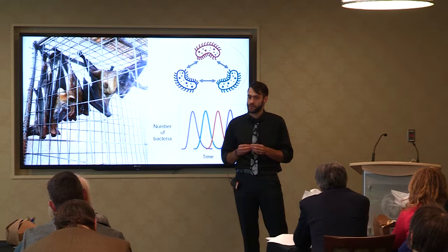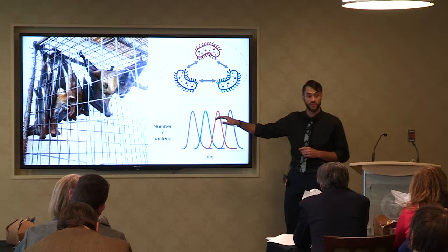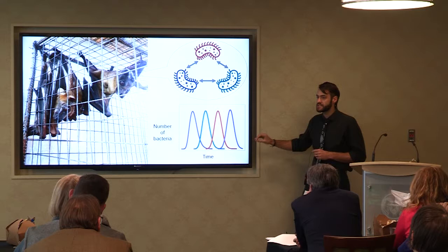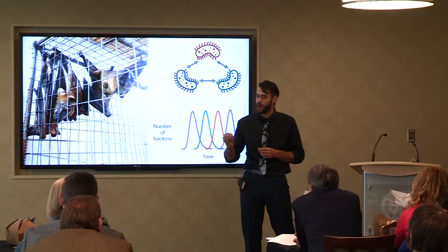With long-term dynamics, we can start to understand the mechanism of their interactions. Using blood samples collected from a captive colony of bats over three years, I can measure the presence of different bacterial types over time. And with statistical models, I can infer the strength of their interactions.